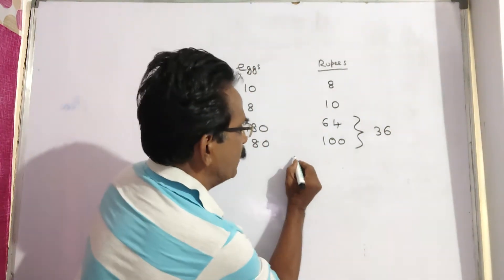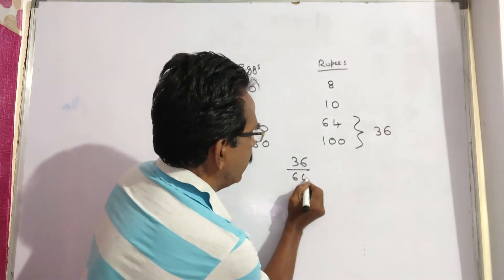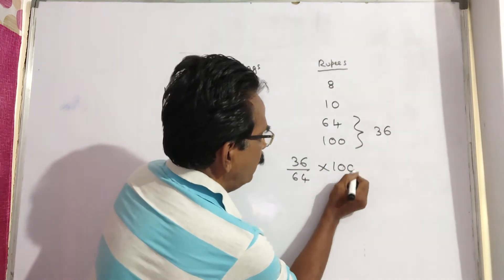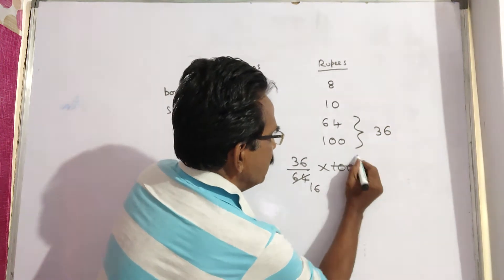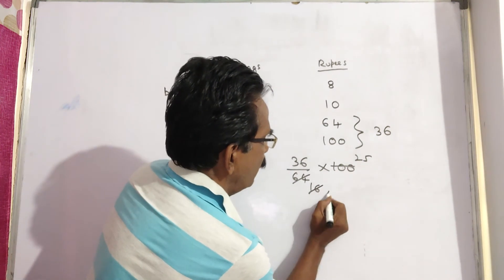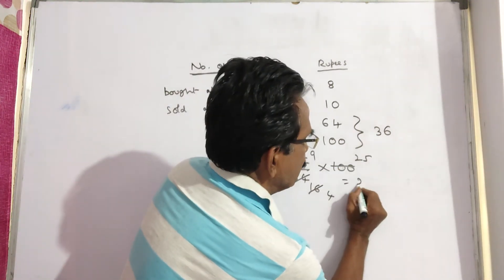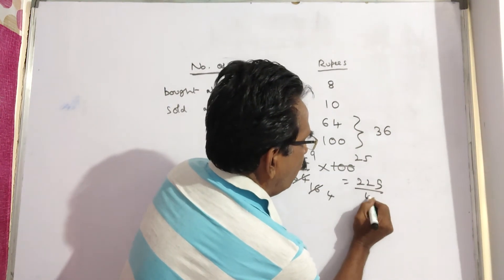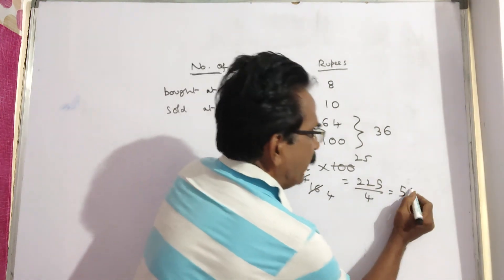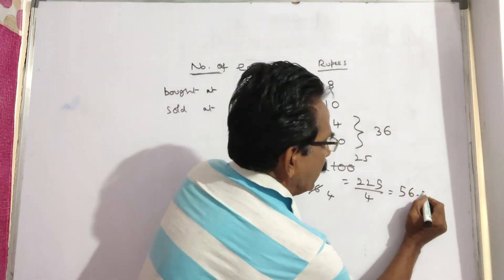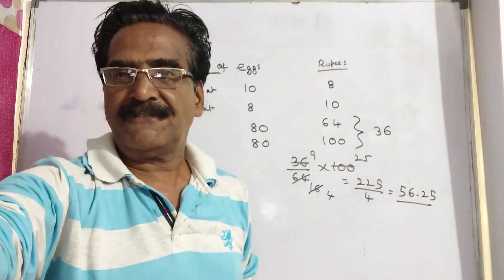Now, profit percent is equal to profit divided by cost price, into 100. So, 36 by 64 into 100. Simplifying: 225 by 4, which equals 56.25%. So the profit percent is 56.25% friends.